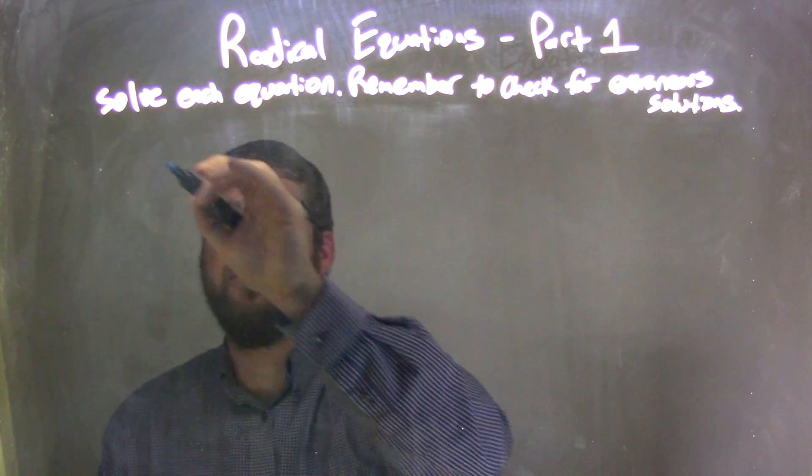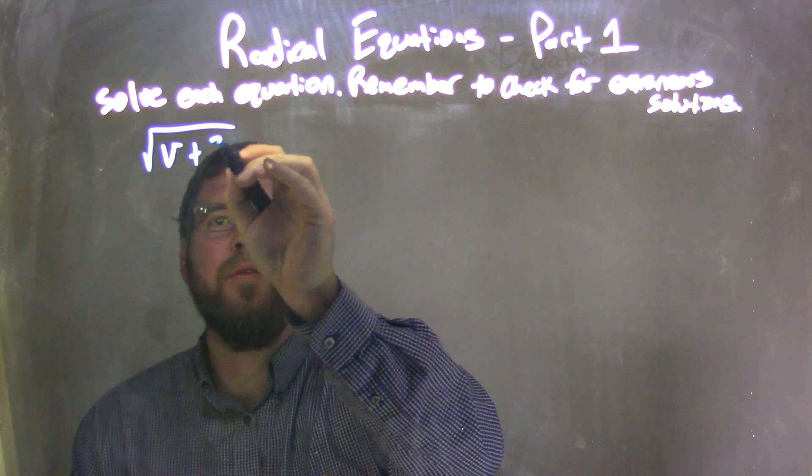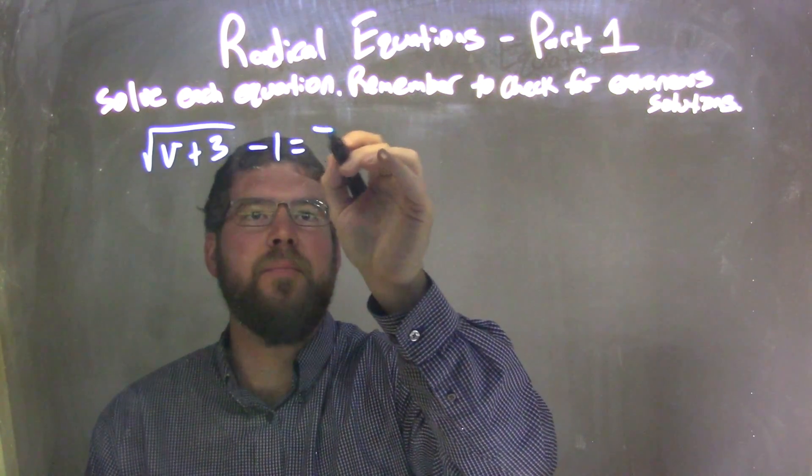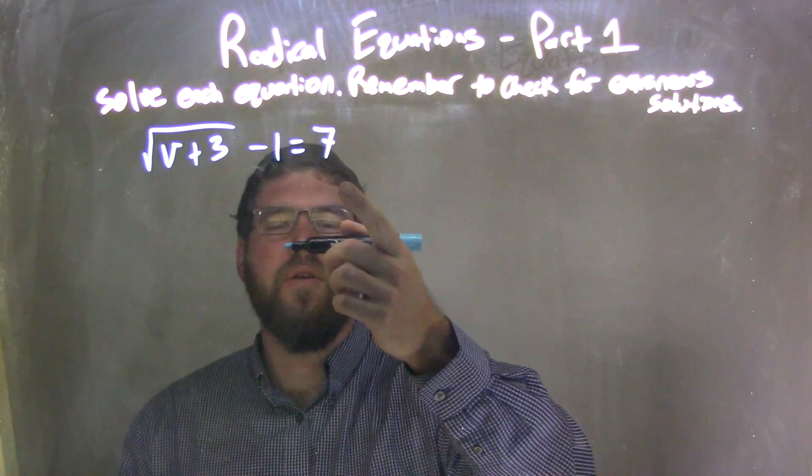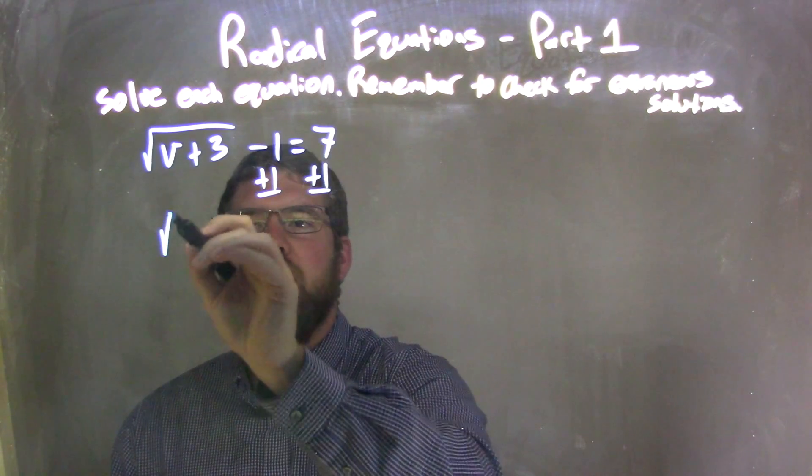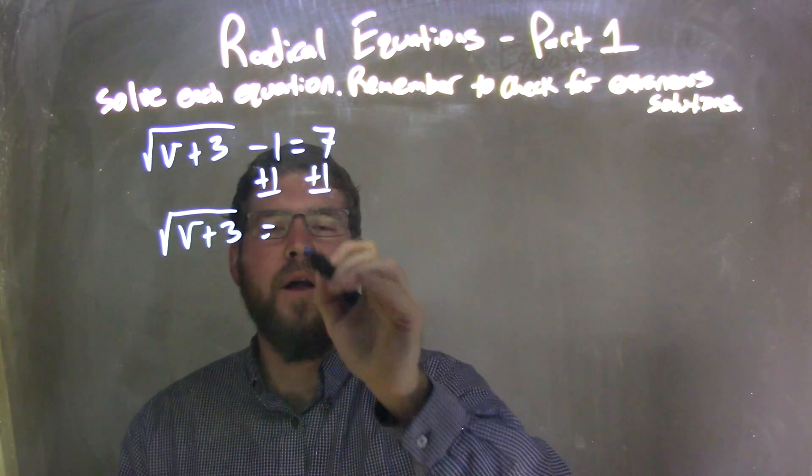If I was given this equation, the square root of v plus 3 minus 1 equals 7, my first step is to bring the 1 to the right. I'm going to add 1 to both sides, leaving me with the square root of v plus 3 equals 7 plus 1, which is 8.